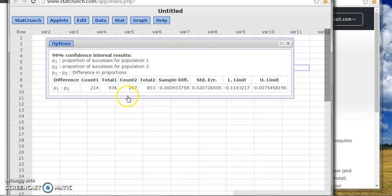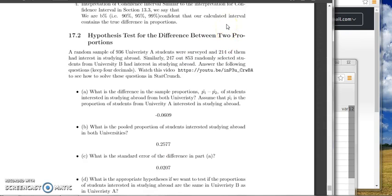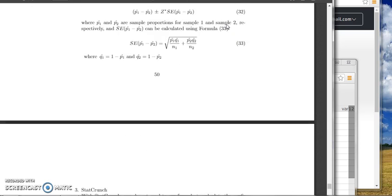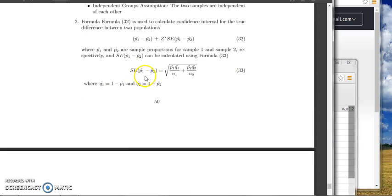This output gives you a lot of information. Like count one is number of success for sample one, total one is sample size for sample one, number of success for sample two, total sample for sample two. And this is sample difference means P1 hat minus P2 hat. And the standard error is the value that we show in this formula. That's this number, standard error of the difference. So in StatCrunch it's so easy, right? You get everything at the same time.